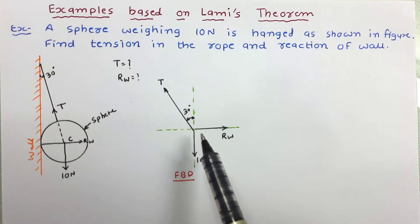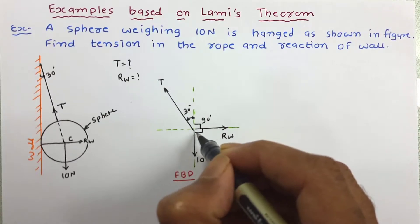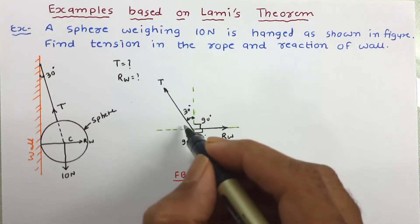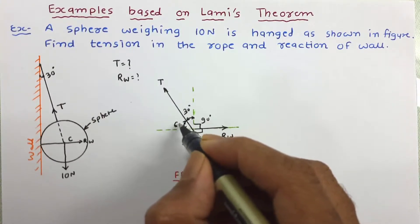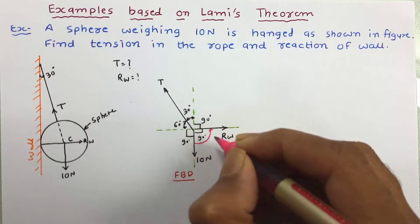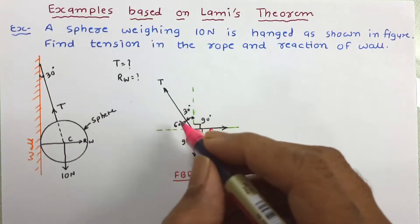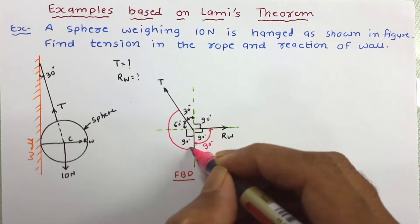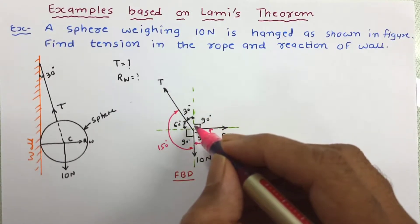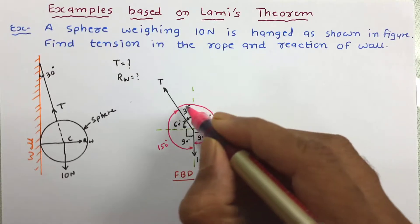We will work out all the angles first. This angle is 90 degrees, this is also a right angle so it is 90 degrees, and this angle is also 90 degrees. This angle is 60 degrees. The angle between 10 Newton and Rw is 90 degrees. The angle between 10 Newton and tension T will be 90 plus 60, so it is going to be 150 degrees. And the angle between T and Rw is 90 plus 30, so this is going to be 120 degrees.